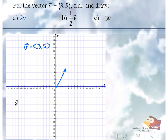So to find 2 times vector V, that means we're doing 2 times the vector 3, 5, which means we're going to multiply through 2 times 3, 2 times 5. Class, 2 times 3, 2 times 5, equals 6, 10.